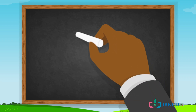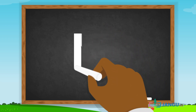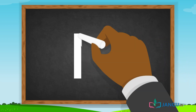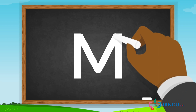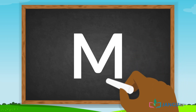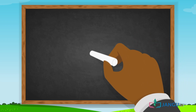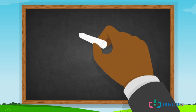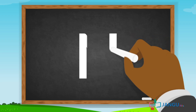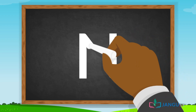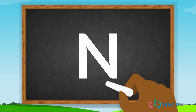L has a long straight line and a short straight line. M has two long straight lines and two short slanting lines. N has two long straight lines and a slanted line joining them from top to bottom.